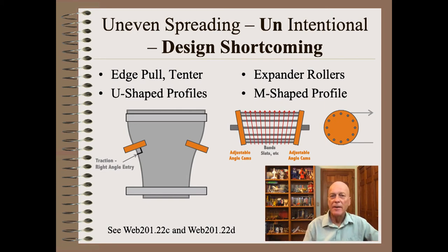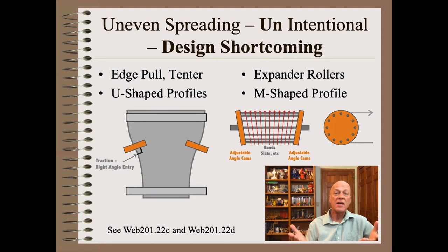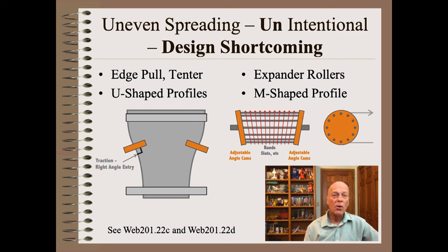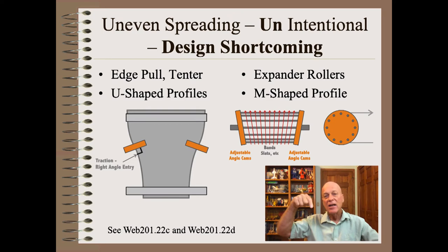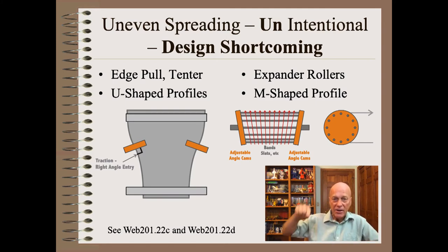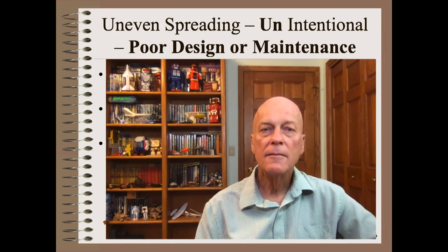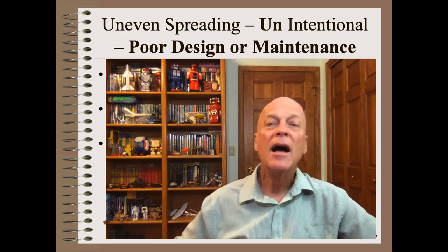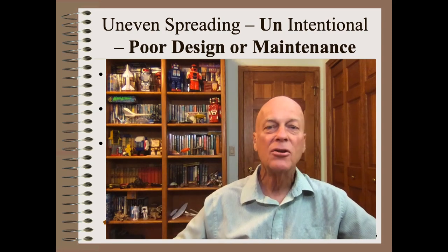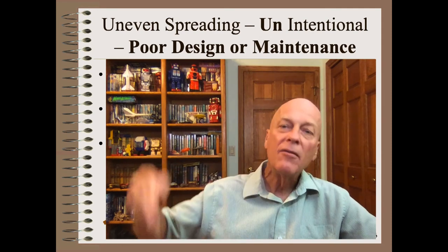Much more common is uneven spreading that is unintentional. Several spreaders have inherent design shortcomings that cause them to be uneven. The edge pull and tenter have U-shaped spreading profiles with more spreading at the edges and little or even no spreading at the center. On the other hand, expander rollers have an M-shaped profile where the peak spreading occurs perhaps near the quarter points.